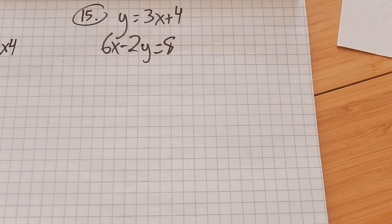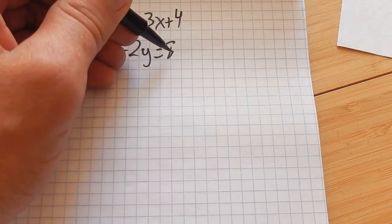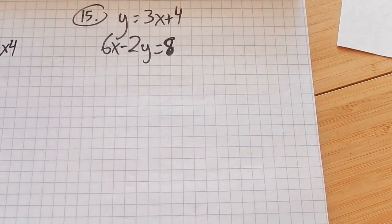Math 98, Practice Test 1. This is problem number 15. On problem number 15, we have a system that we are supposed to solve. That's a sloppy 8.